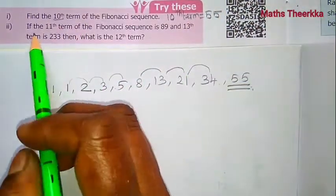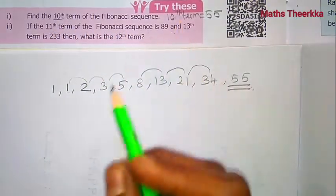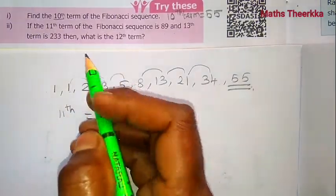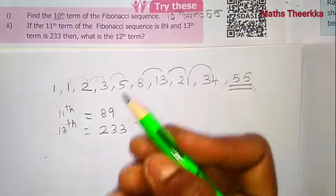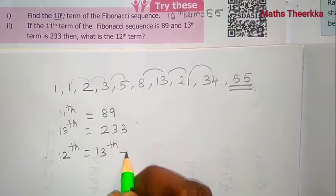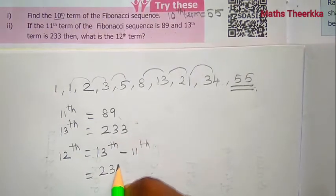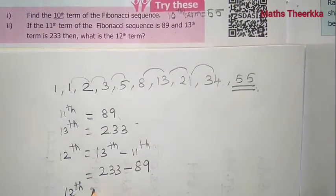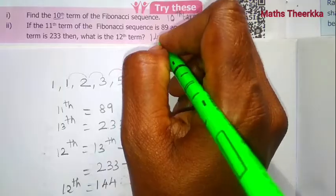If the 11th term of the Fibonacci sequence is 89 and the 13th term is 233, what is the 12th term? The 13th term minus the 11th term: 233 minus 89 gives 144. So the 12th term is 144.